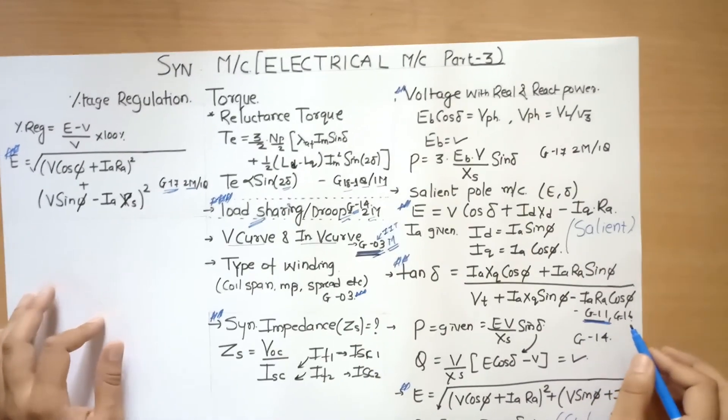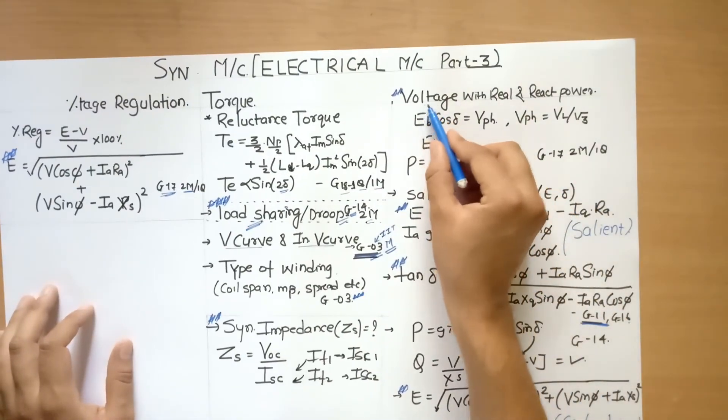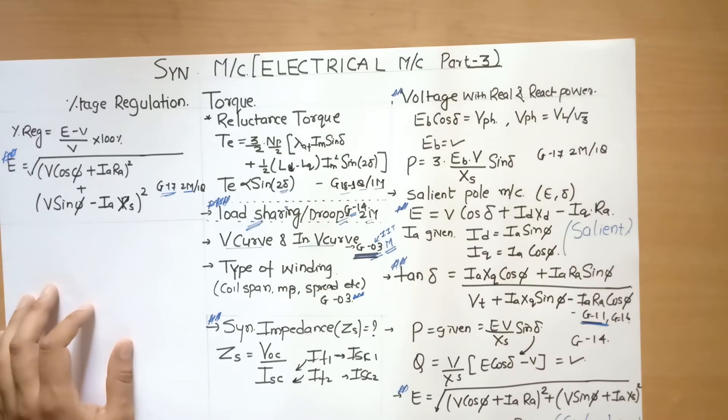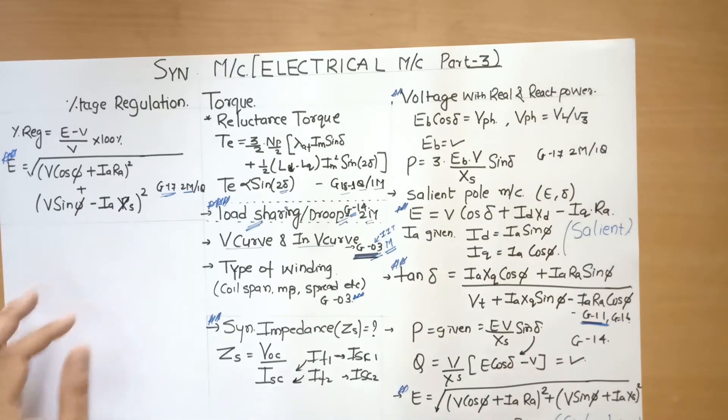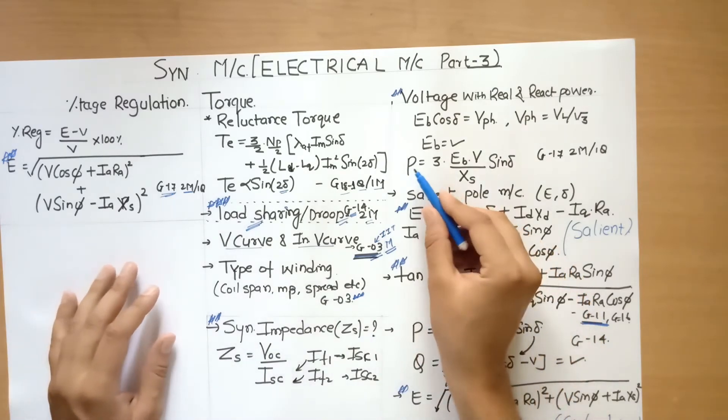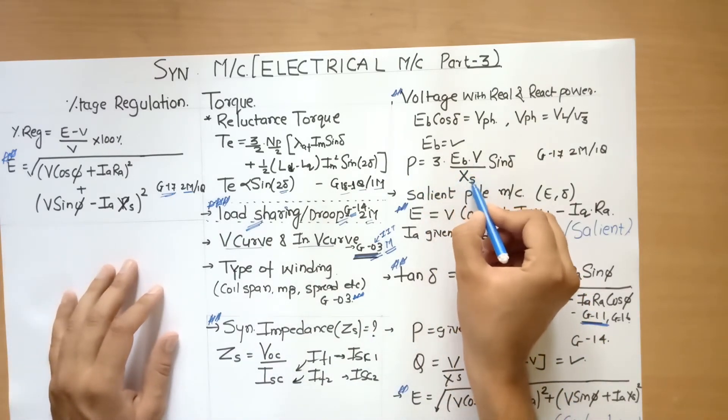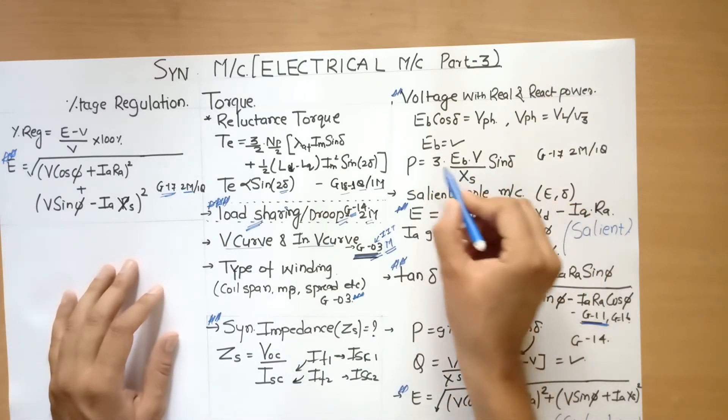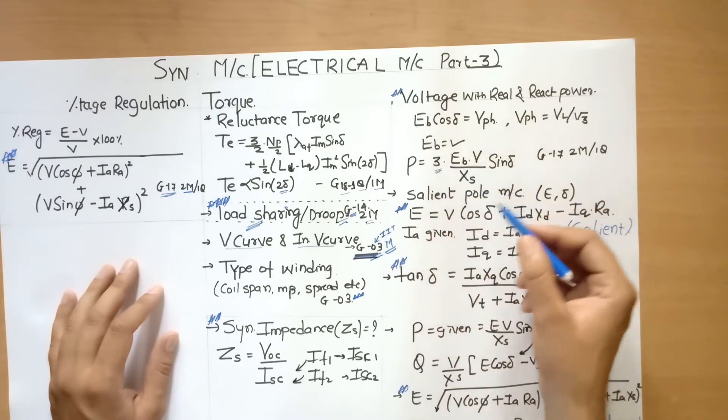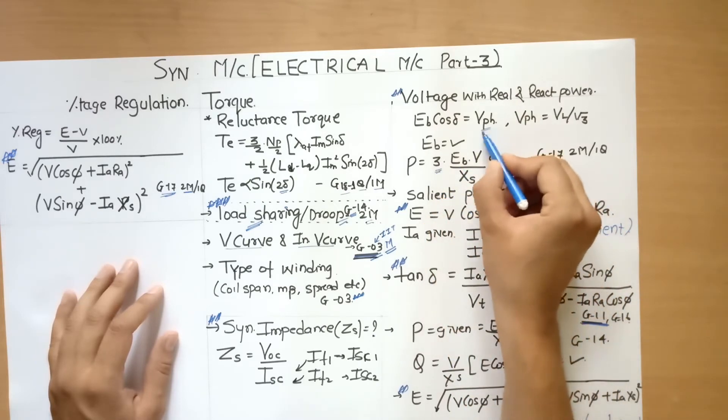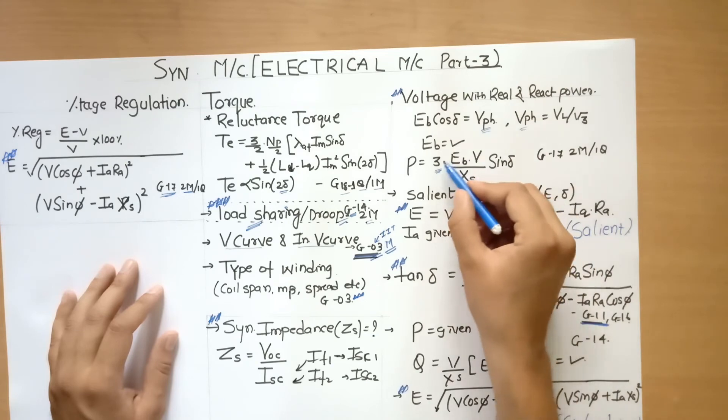Now let us move forward with a new topic: voltage with real and reactive power. In most cases where synchronous machine numericals are there, you have to remember this equation: P equal to Eb upon Xs into sin delta. Three over here because we are going with one phase. This is one phase, so for three phase you have to multiply with three. This is the equation.